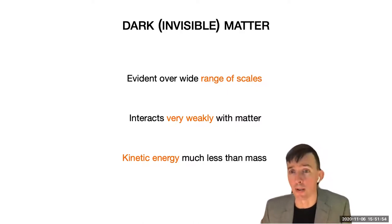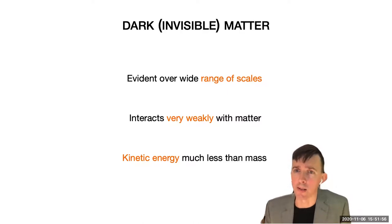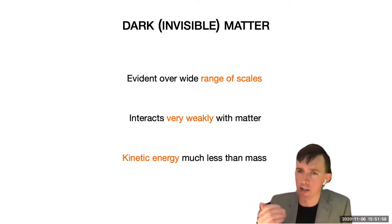We don't know much about dark matter, but what we do know is that it must interact very weakly with ordinary matter, if at all, other than gravitationally. Furthermore, we know that its kinetic energy is much less than its mass — it's moving slowly.